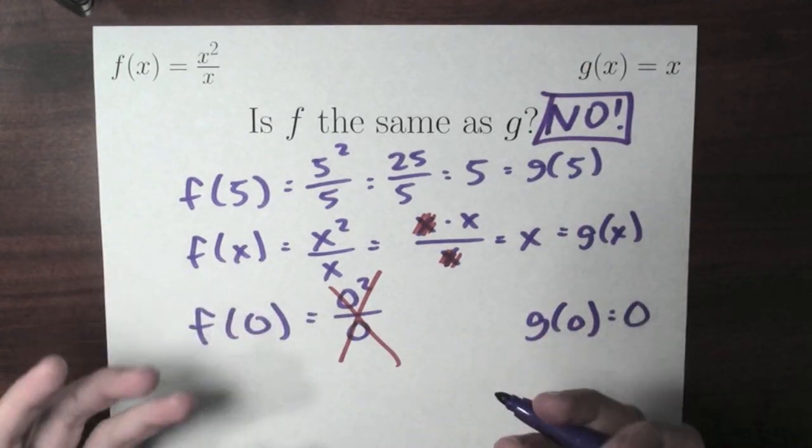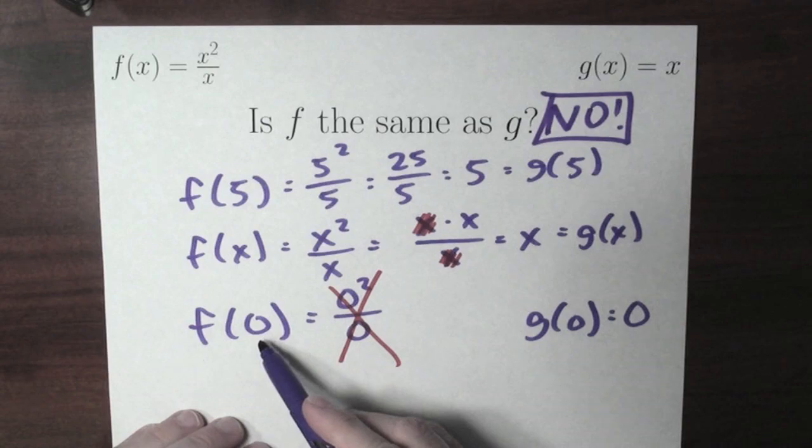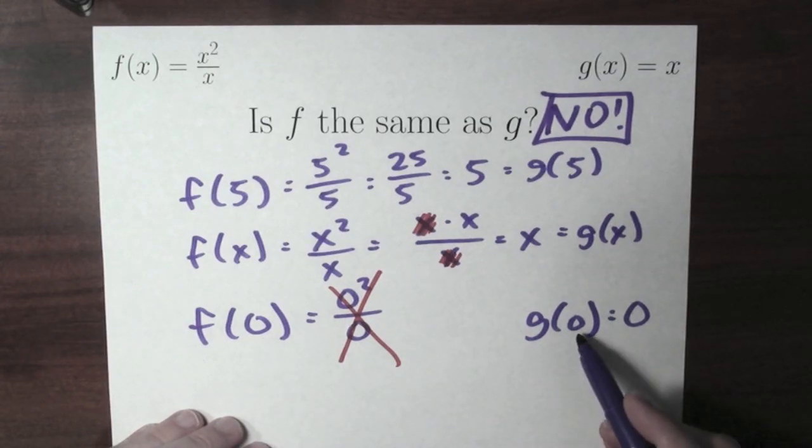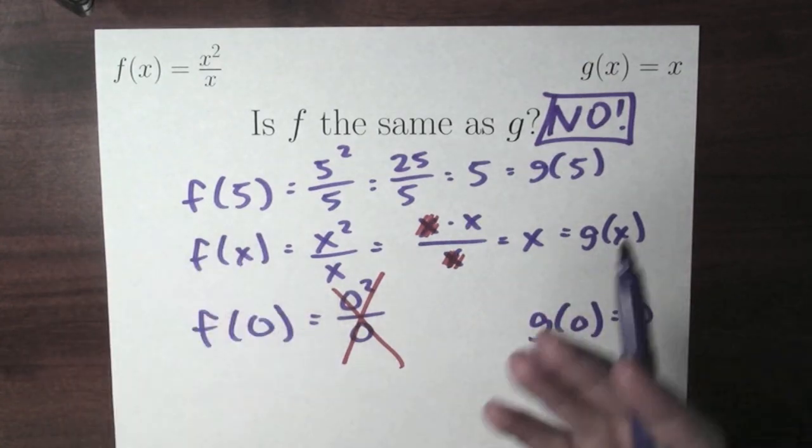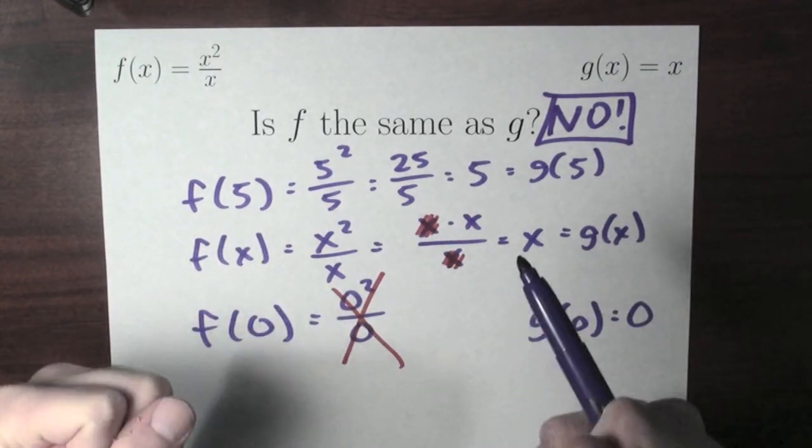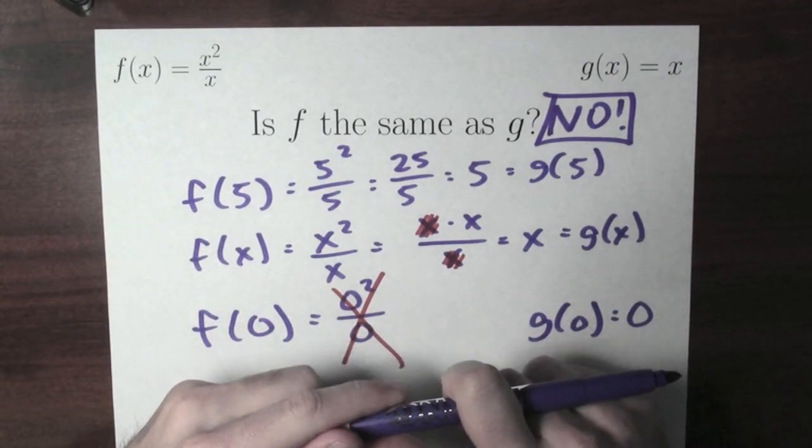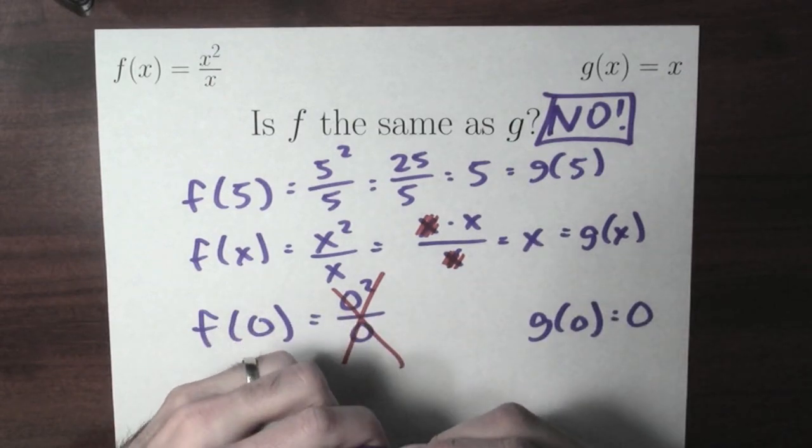So I'm going to say that these are not the same function. They don't have the same domain. f isn't defined at 0, and g is defined at 0. And in that sense, these are really different functions. Now, this example suggests that there's a real richness to this theory of functions. We're going to be studying it a lot more for this term.